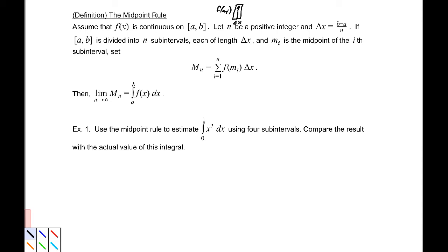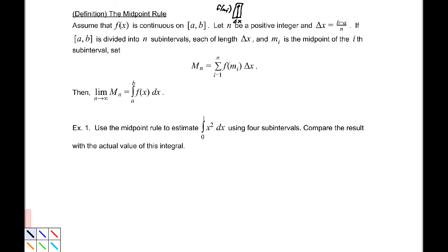I'm going to dive into example one and use the midpoint rule to estimate the definite integral from zero to one of x squared dx using four subintervals. We'll compare that to the actual value in a moment. To begin with, we need to find delta x. Delta x is (b-a)/n, which would be (1-0)/4, so delta x is 1/4.